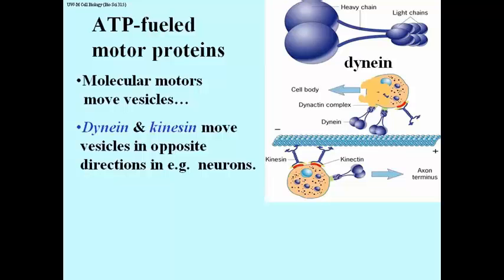Now what's shown here for a nerve cell is also true of other cells. In the case, for example, of a pigment cell, the pigments will be carried by dynein in one direction and kinesin in the other, depending on whether the cell has to darken or lighten.